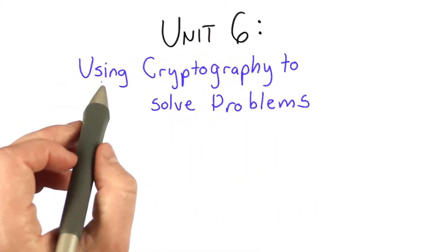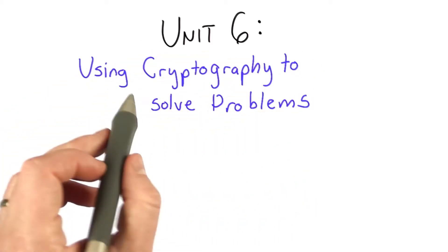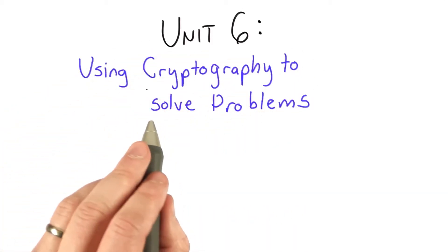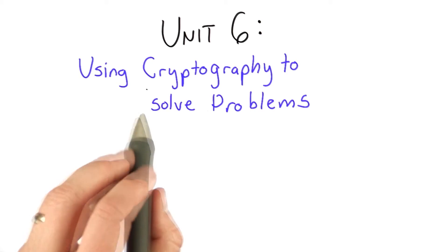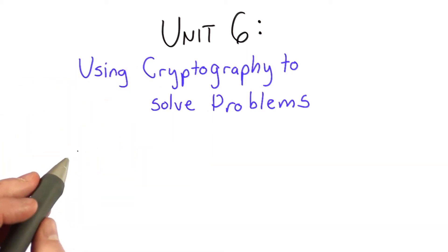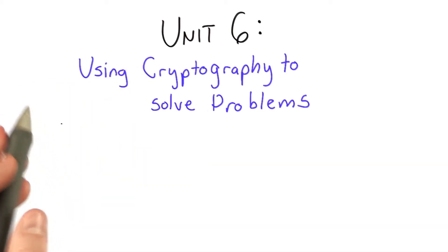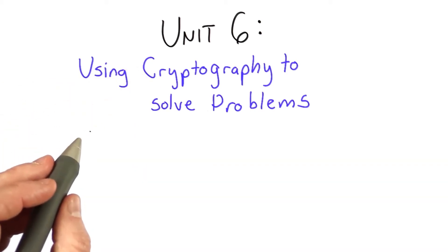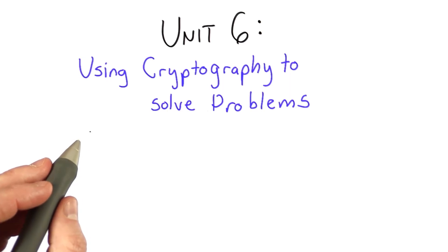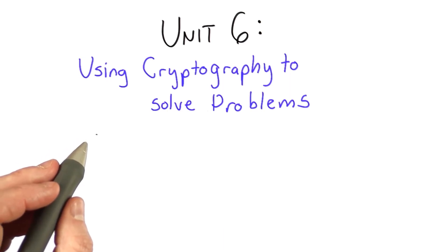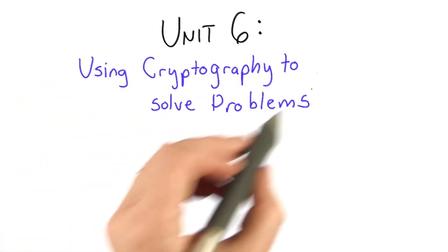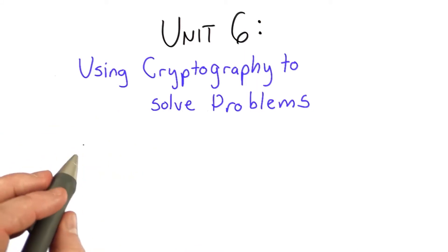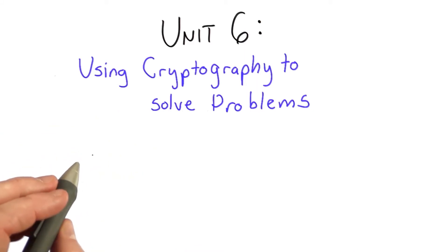Welcome to Unit 6. In Unit 6, we're going to look at ways to use cryptography to solve a wide range of problems. In Unit 5, we focused on using cryptography to solve the traditional problem of authentication and then communication with secrecy and integrity. What we're going to look at in Unit 6 is different kinds of problems we can solve using cryptography.